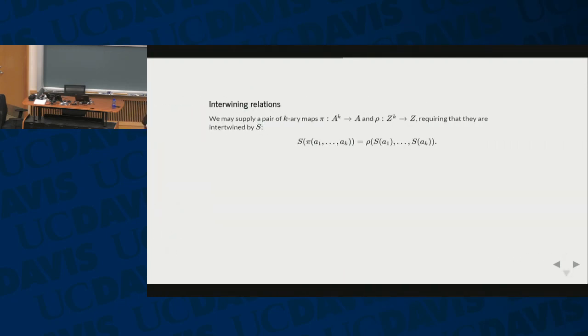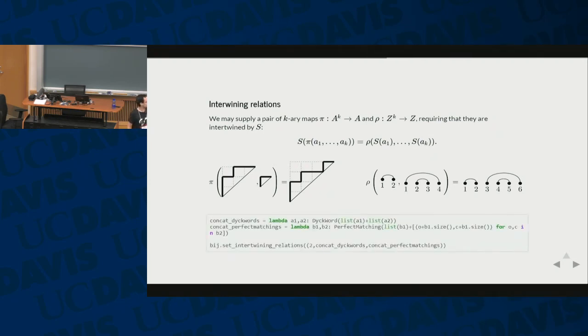So we set some more constraints, which we call intertwining relations, and I guess it's best on an example. So if you have two Dyck paths, you can compose them. You can glue them together, get another Dyck path. You can do something similar with non-crossing perfect matchings. You take one matching, you take the other matching, write them next to each other, you get another matching. And you can also set constraints like this. We've just defined the concatenation and then set it into intertwining relations.